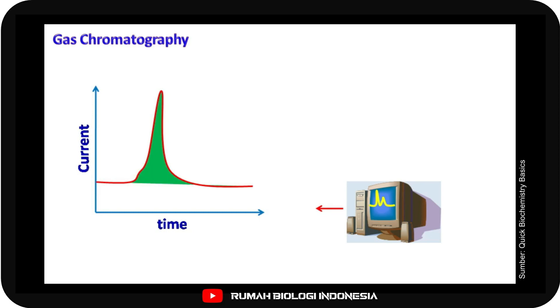If the concentration is less, the area under the peak will be less. And if the concentration is more, the area under the peak will be more.